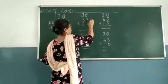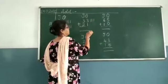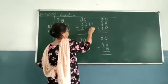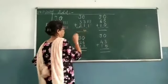So first you are going to draw 3 lines. Then 1. So now count all. 1, 2, 3, 4. We are going to write 4.